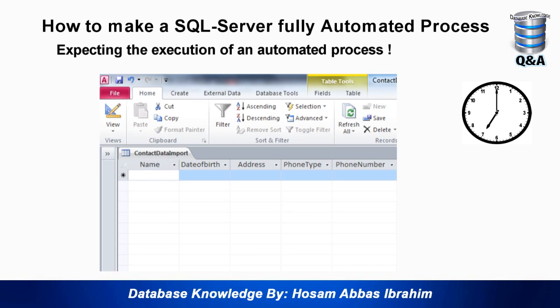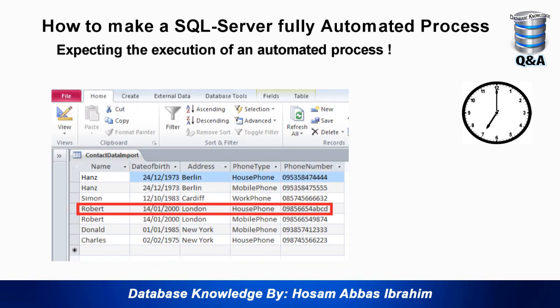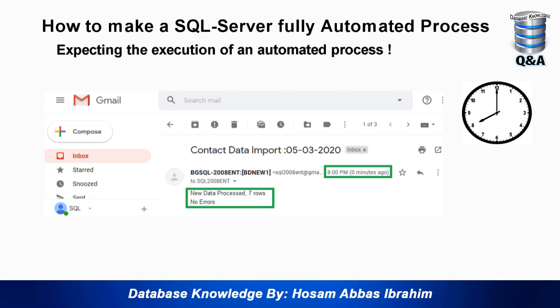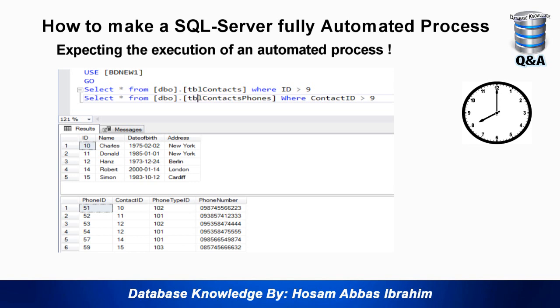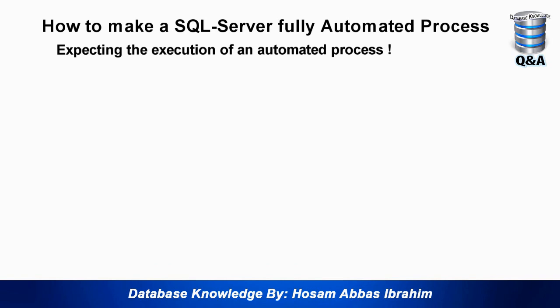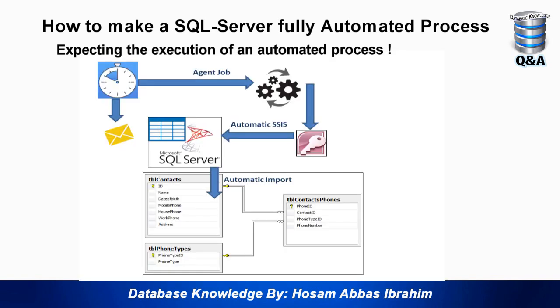I then added new contacts and phone numbers to the Access file and waited for 20:00 hours. At 8 PM I received an email saying 'New data processed, 7 rows, no errors' — because I had put seven phone numbers in Microsoft Access. Regardless of how the Microsoft Access data gets filled or updated — whether someone does it manually, or through data crawling, data scraping, or anything else — as long as there is new data in the Access source, it will automatically be processed and imported to the database.